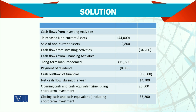Then cash flow from financing activities — we got a loan redeemed, meaning we paid it back, so that is an outflow. Similarly, dividends were paid as well, so that is again an outflow. We now take all three activities together: operating, investing, and financing.